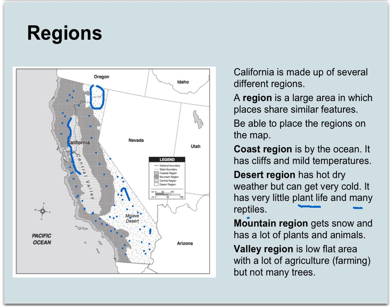You can see here is the Central Valley. If you've ever driven up that way on the 5 Freeway, maybe on your way to Sacramento or San Francisco, you know it's pretty boring driving through there. There's just a lot of farmland. It's very flat and not a lot of big trees.